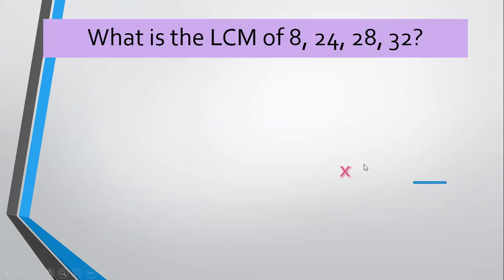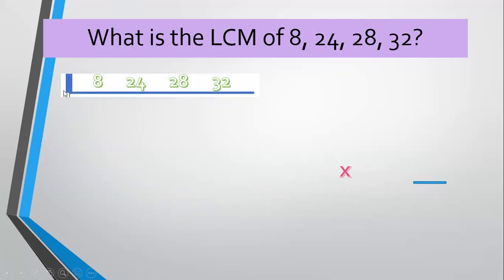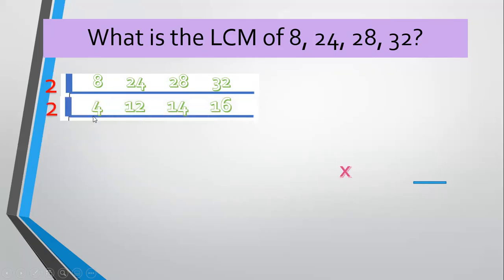Let's have an example. What is the LCM of 8, 24, and 32? Align 8, 24, and 32. Think of a prime common factor, 2. 8 divided by 2 equals 4. 24 divided by 2 equals 12. 32 divided by 2 equals 16. Divide again by a prime common factor, 2. 4 divided by 2 equals 2. 12 divided by 2 equals 6. 16 divided by 2 equals 8.